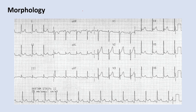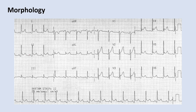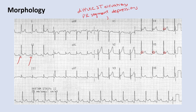This EKG shows diffuse ST elevations in almost all leads, depressed PR segments, and J-point elevations — findings of acute pericarditis. The diffuse ST elevations are the classic buzzword, but in practice you may not always see them. You may instead see PR segment depressions or J-point elevations in the right clinical context, which should clue you into acute pericarditis. So look for: diffuse ST elevations, PR segment depressions, and J-point elevations.